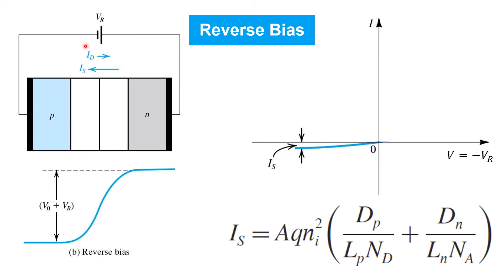Diffusion currents decrease rapidly as VR increases and very quickly become almost zero. Thus, the only current that remains is the relatively small drift current, IS, that flows from the N terminal to the P terminal of the PN junction.